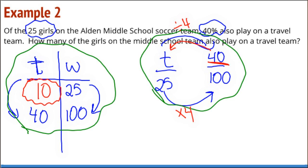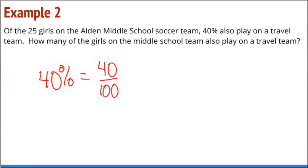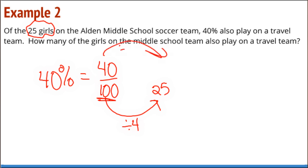I've done all of this using our table and our scaling, using the relationships between all of these numbers. Another way I could look at this: I know that 40% is equal to 40 over 100. I need to take the total team from this 100 and scale it down to 25, so I divide by 4. I need to take this 40 and scale it down by dividing by 4. I find that 10 of the 25 members are on a traveling team.